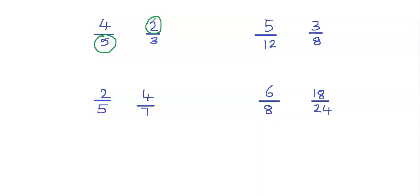5 times 2 will give me 10, so I'll put 10 next to my numerator. Now you have to keep track of how you're multiplying. You have to make sure that you put 10 next to 2 because 2 is the numerator that you multiplied. You cannot put 10 here because you did not multiply by 4. You have to put your product next to the numerator that you multiplied.